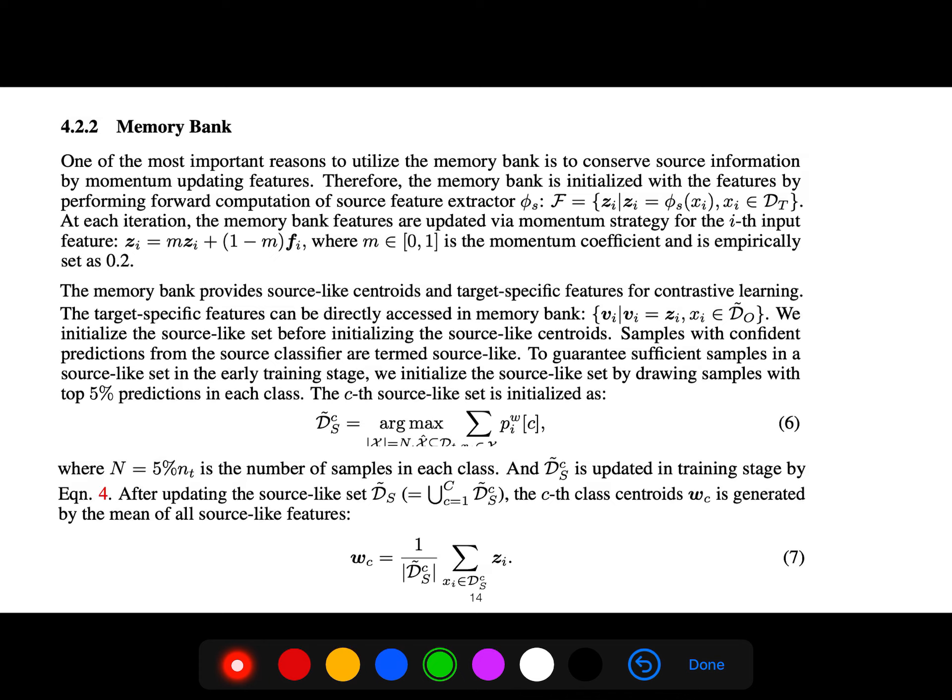The target-specific features can be directly accessed in the memory bank. We initialize the source-like set before initializing source-like centroids. Samples with confident predictions from the source classifier are termed source-like. To guarantee sufficient samples in the source-like set, we initialize by drawing samples with top 5% predictions in each class.